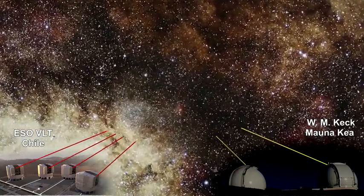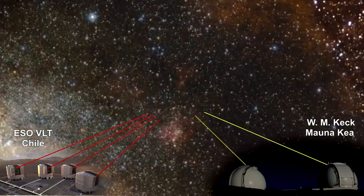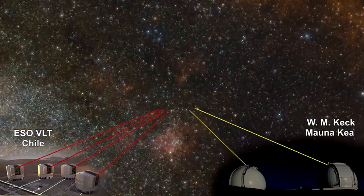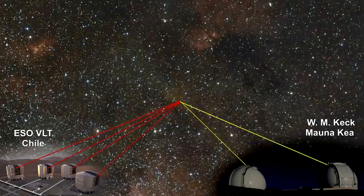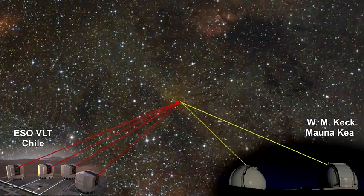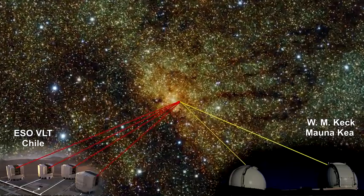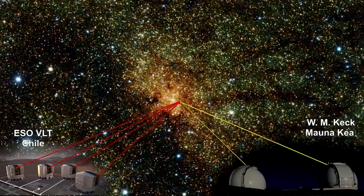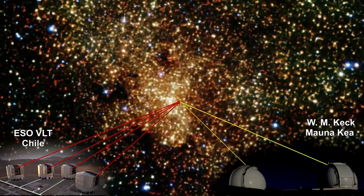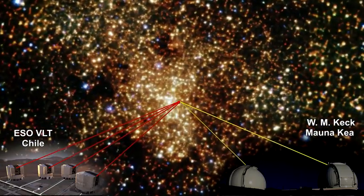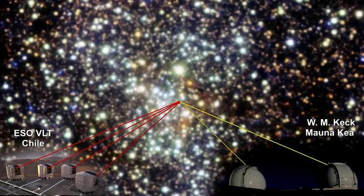The UCLA Galactic Center Group, along with the Keck Observatory on top of the Mauna Kea volcano in Hawaii, the European Southern Observatory and its array of very large telescopes in Chile, and the Max Planck Institute for Extraterrestrial Physics in Germany, and many others have made dramatic progress in advancing our understanding of this critically important part of our galaxy.